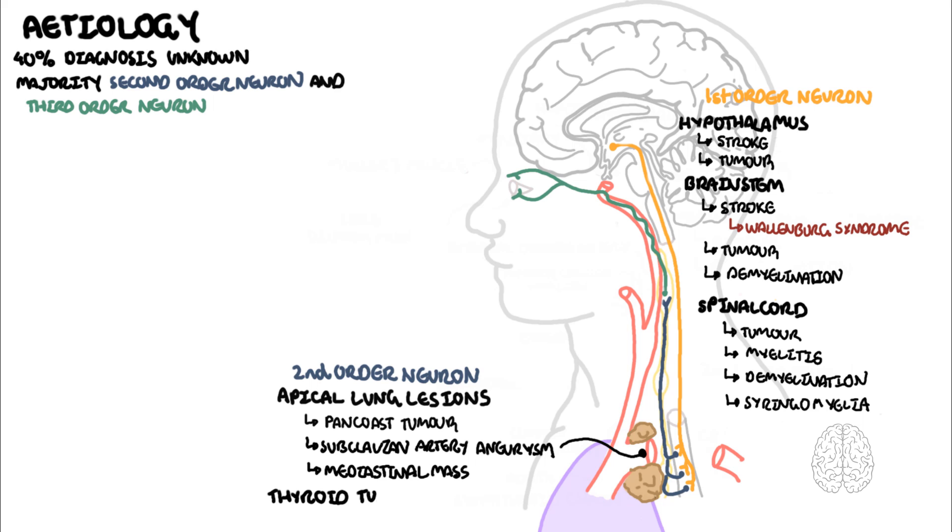Thyroid tumors, especially anaplastic carcinomas, which can rapidly grow and compress the surrounding structures, including compressing the second-order sympathetic neuron.